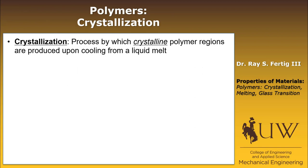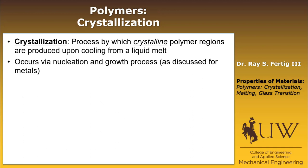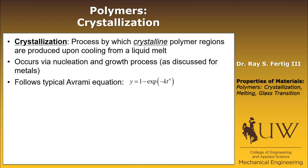Crystallization is the process by which crystalline polymer regions are produced upon cooling from a liquid melt. Crystalline polymer regions means the regions in the polymer that have an ordered and repeated structure — not just anywhere in the polymer. Crystallization occurs via nucleation and growth processes, just as we talked about for metals, and it follows a typical Avrami equation that we also talked about back in Chapter 6.